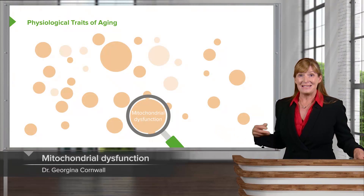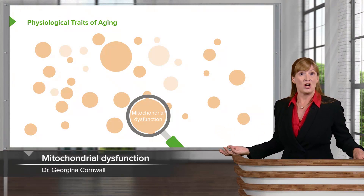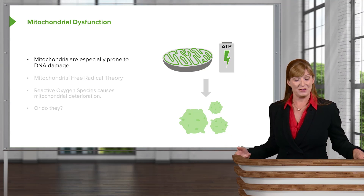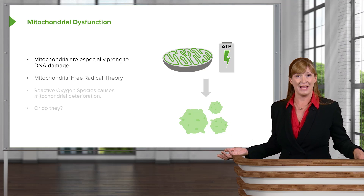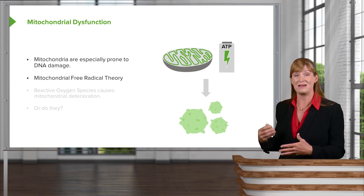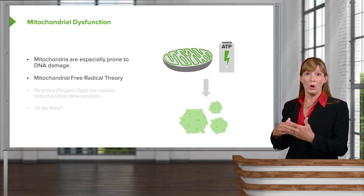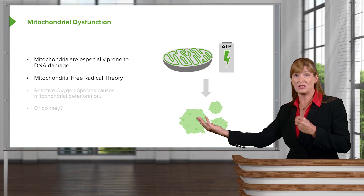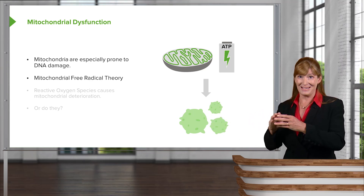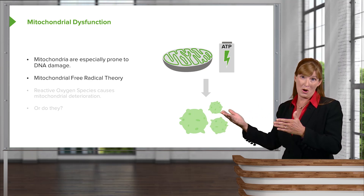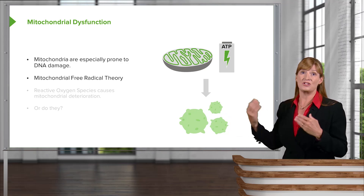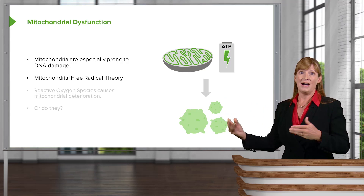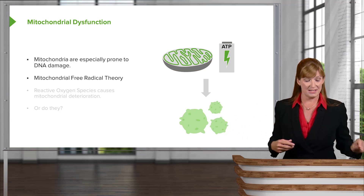Let's summarize some of the things that happen with mitochondrial dysfunction. We know that mitochondria are especially prone to DNA damage, and there's even a whole theory — the mitochondrial free radical theory — that suggests the more we consume and eat, the more cell respiration occurs, and thus the more oxygen is split to form H2O, which generates free radicals that can cause damage, and the more of that damage that's done, the more aged cells become.